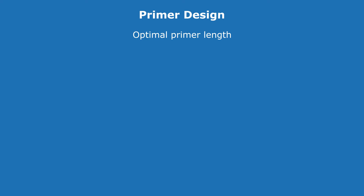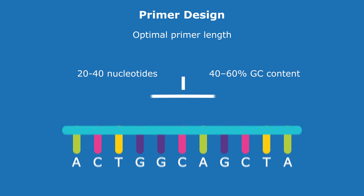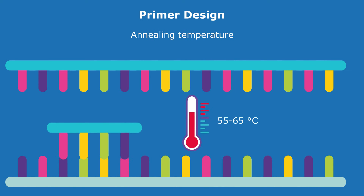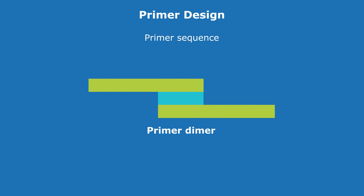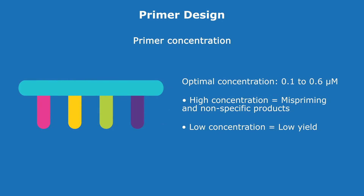Having a good primer pair can dictate the PCR outcome. General recommendations to consider while designing the primers are primer length, balanced distribution of GC and AT-rich domains, and the annealing temperature. Additionally, it is crucial to design the right primer sequence to avoid complementarity between the forward and reverse primers, preventing primer dimer formation, and to use an optimal primer concentration. The recommended primer concentration is between 0.1 to 0.6 micromolar.